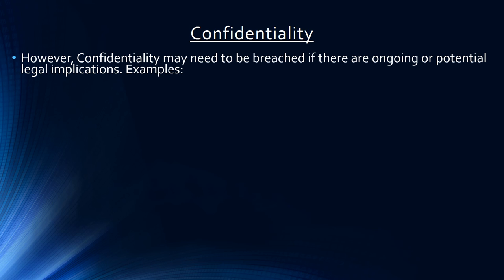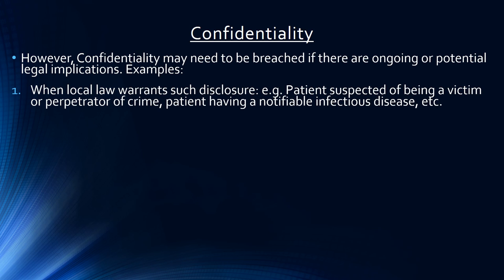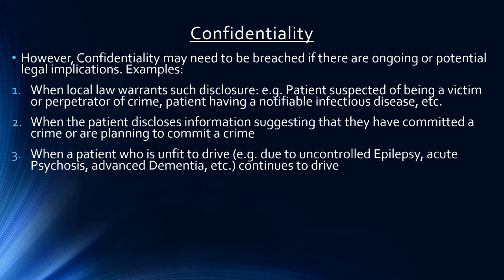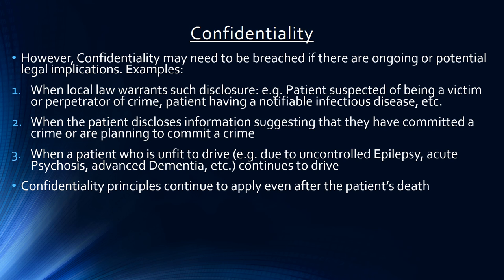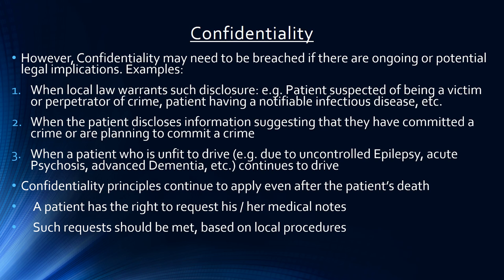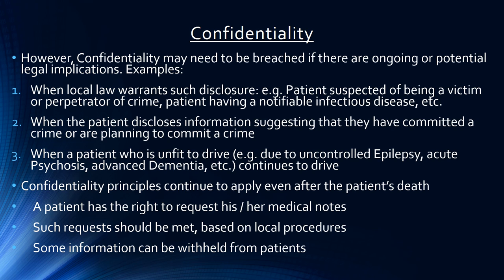Confidentiality may need to be breached if there are ongoing reporting requirements or potential legal implications — for example, when local law warrants such a disclosure, when a patient is suspected of being a victim or perpetrator of a crime, when a patient has a notifiable infectious disease, when a patient discloses plans to commit a crime, or when a patient who is unfit to drive — due to uncontrolled epilepsy, acute psychosis, or advanced dementia — continues to drive. Confidentiality principles continue to apply even after a patient's death, and patients have the right to request their medical notes, with some information potentially withheld in accordance with local guidelines.